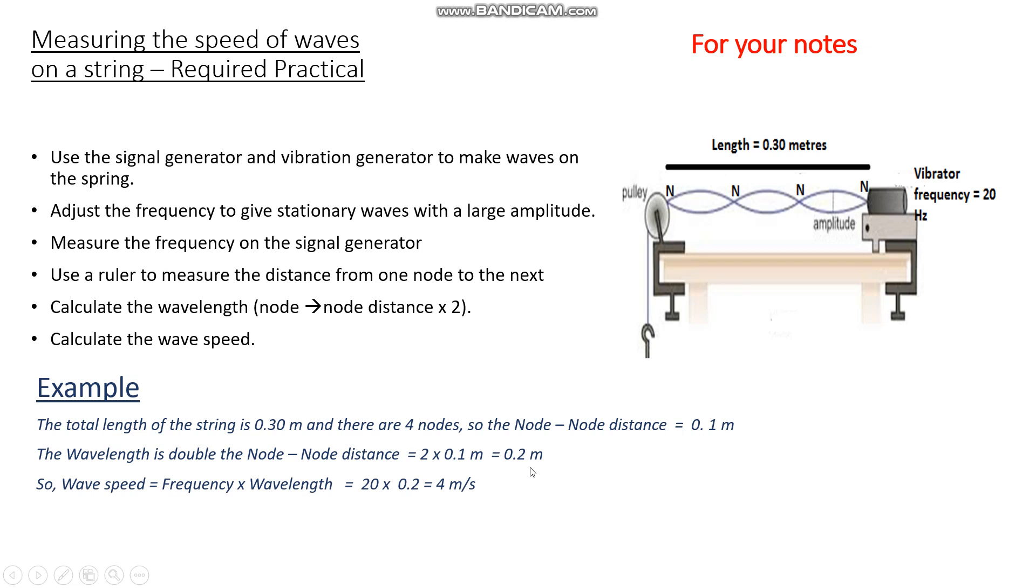So the wave speed, as you should be familiar with by now, is equal to frequency times wavelength. The frequency is given to us on our signal generator, which is driving our vibration generator here, and we're told in the question here and the information that it's 20 Hertz. So the wave speed is 20 multiplied by 0.2, the wavelength, double the node distance, and that gives us 4 meters per second.